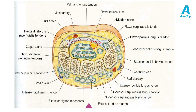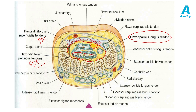The median nerve is accompanied by several tendons inside the carpal tunnel — it is very closely related to the flexor pollicis longus tendon, flexor digitorum profundus tendons, and flexor digitorum superficialis tendons. These are all the structures within the carpal tunnel. The flexor carpi radialis tendon pierces the flexor retinaculum and travels inside, whereas palmaris longus, ulnar artery, and ulnar nerve travel outside the flexor retinaculum, making them less prone to compression injuries.